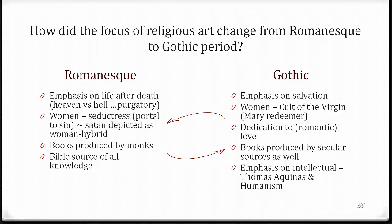Comparatively, in the Gothic era a shift occurred — there was more emphasis on salvation. We see female representation where Mary receives more representation as this great mother, as this redeemer, as a sort of intervener. There is that dedication to romantic love. We have books produced by secular sources as well and for a secular market. There is an emphasis on the intellectual with the works of Aquinas and also the various philosophies of humanism.